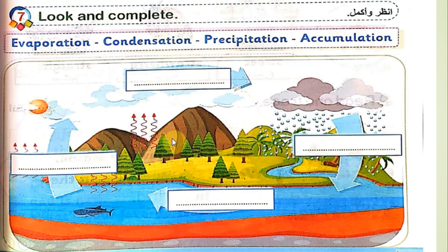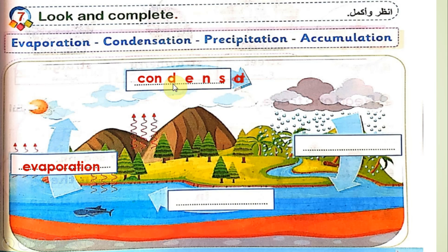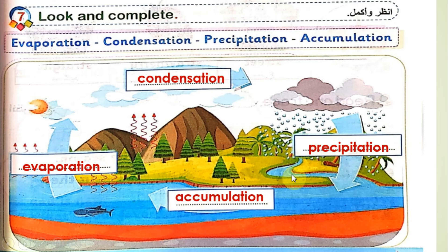Final activity: Look and complete the water cycle diagram. Starting from any stage — for example, the stage where water vapor rises is called evaporation التبخر, then comes condensation التكثيف, then precipitation هطول المطر, then accumulation التجميع أو تراكم المياه.